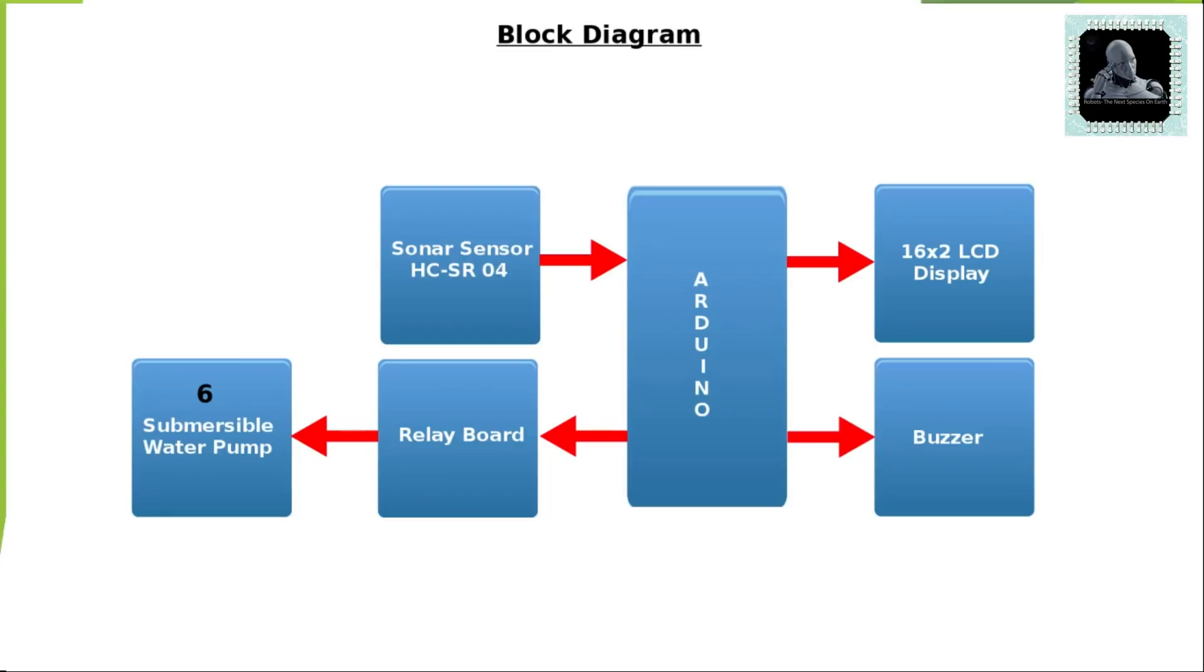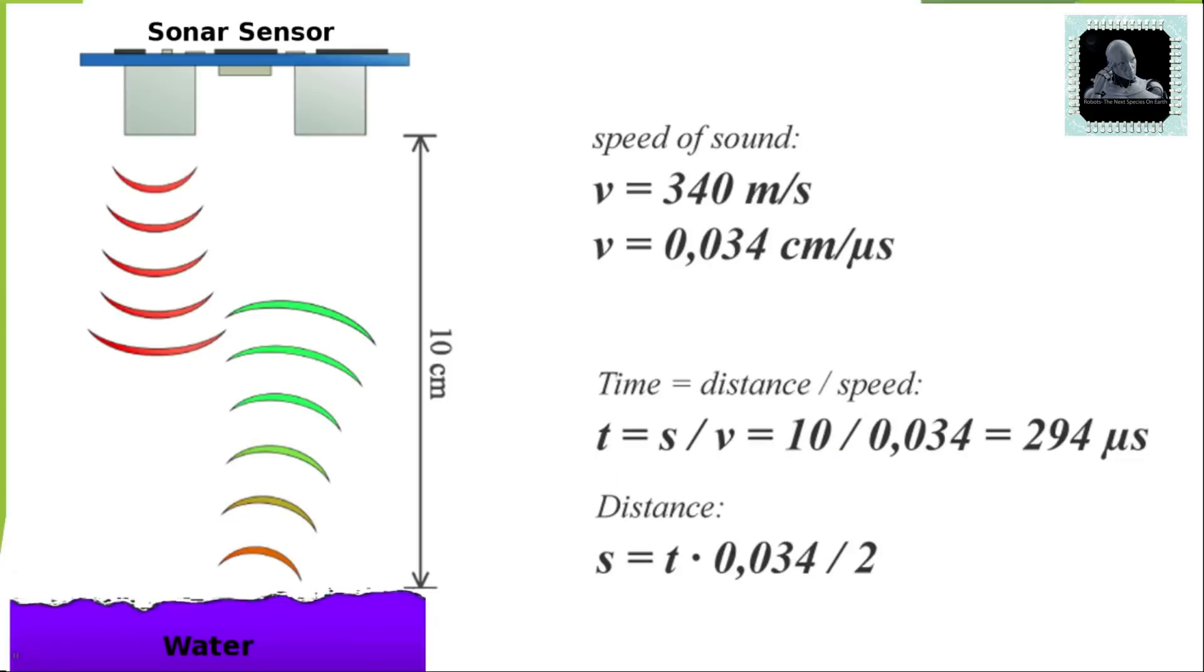Let's understand the working principle of the sonar sensor. Sonar sensor emits an ultrasound at 40 kilohertz which travels through the air, and if there is an object or obstacle on its path it will bounce back to the module. Considering the travel time and the speed of sound you can calculate the distance. Arduino will use the echo pin present on ultrasonic sensor to measure sound wave travel time in microseconds.